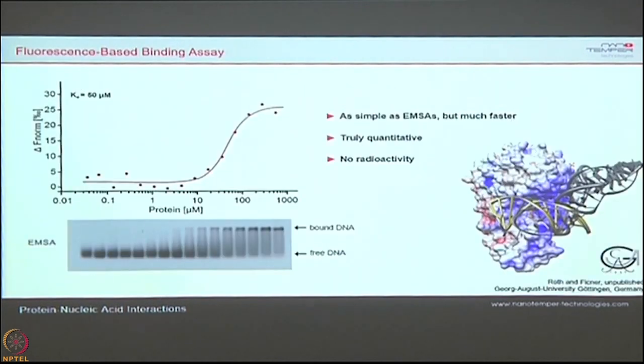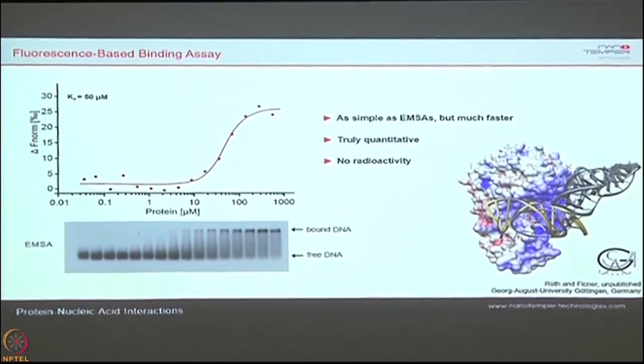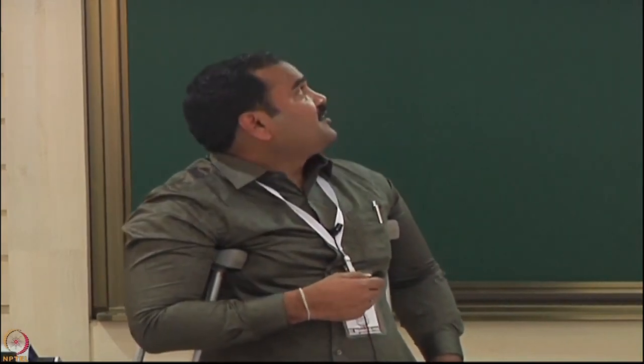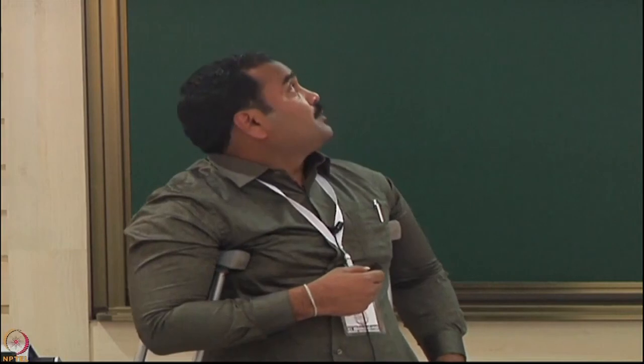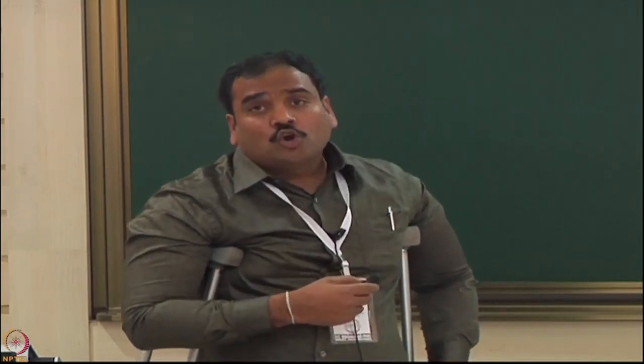Traditionally people do EMSA. You know the pain of doing an EMSA — you always get qualitative but never quantitative information. In the same studies done with EMSA, you label the DNA with a Cy5 or Cy6 dye, titrate the other component, and you are able to determine the KD. With a smaller volume of sample you quantitatively determine the KD, overcoming all limitations of EMSA and radioactive labeling.